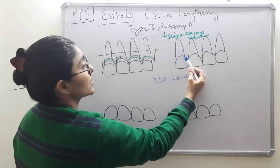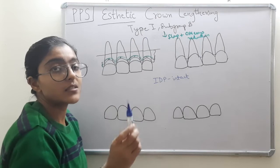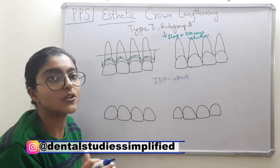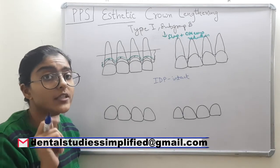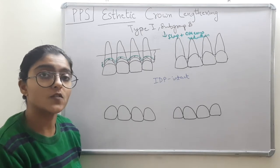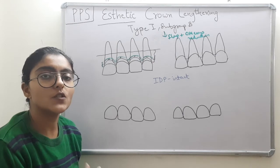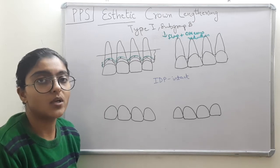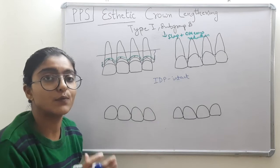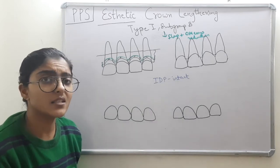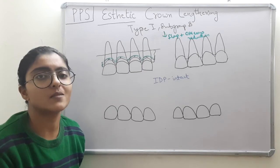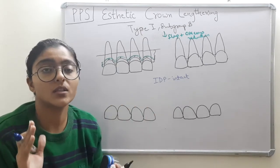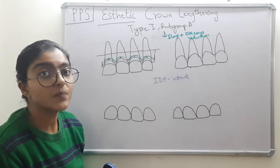Our incision will be scalloped and horizontal — scalloped to help maintain the normal gingival architecture. The incision type is internal bevel. Under internal bevel there are three types: sub-marginal, crestal/marginal, and sulcular. Since aesthetic crown lengthening is confined to only the facial/labial aspects, the surgical technique is performed only on the labial or facial aspects of the anterior teeth.